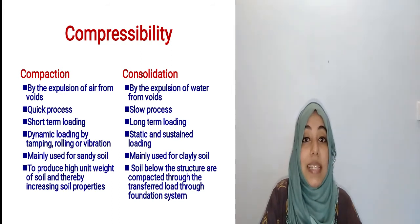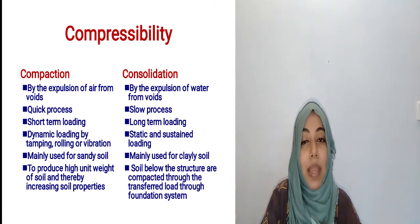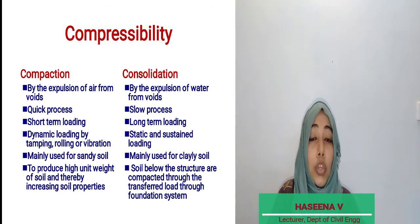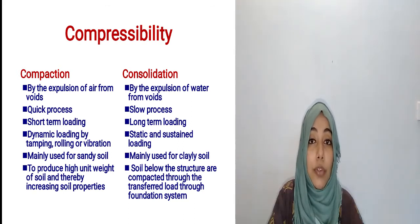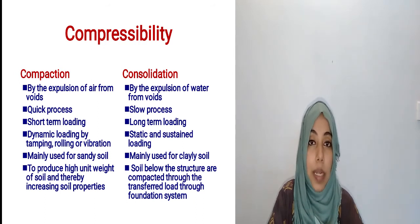Compaction is mainly used for sandy soils, whereas consolidation is mainly used for cohesive or clay soils. Through compaction, we can produce high unit weight of soil and thereby increase the soil properties.